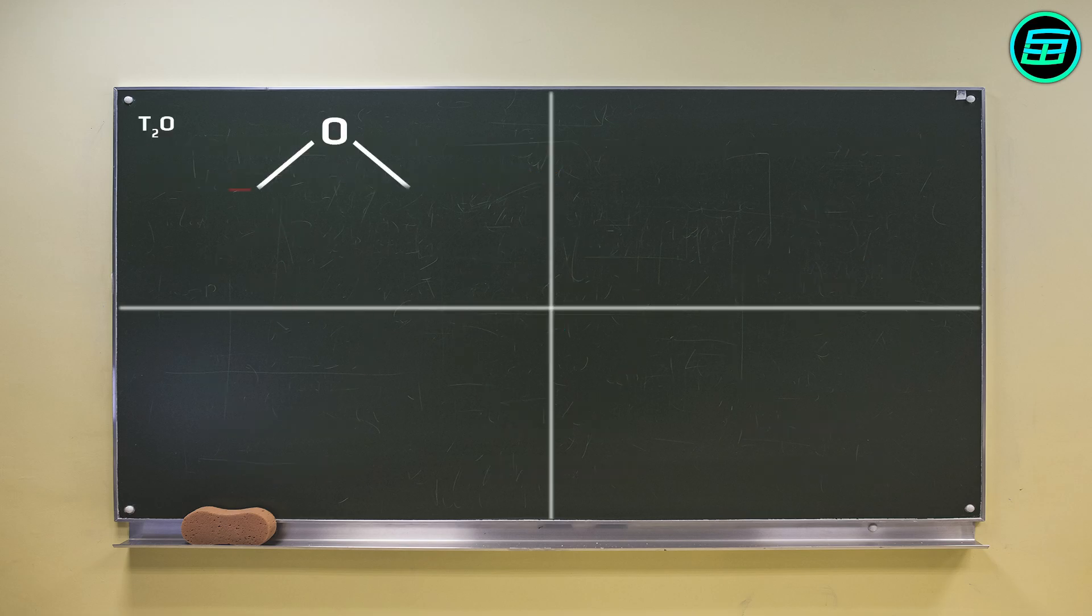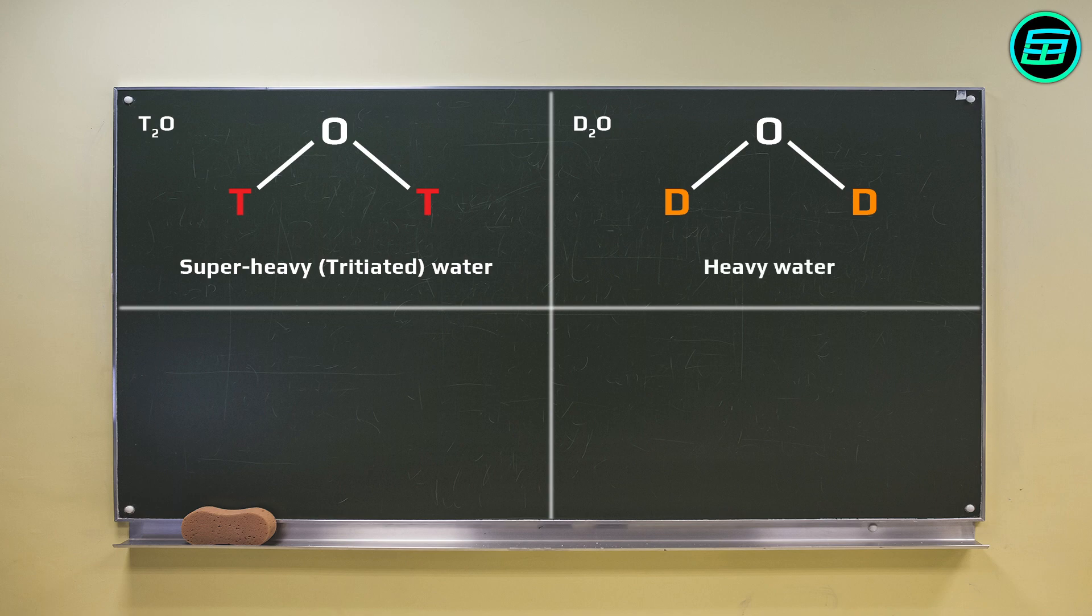Water that's made of tritium is called super heavy water, or tritiated water. Whereas water that's made of deuterium is called heavy water. Water that contains only protium is known as light water. As you might guess, if a water molecule consists of one deuterium and one protium, it's referred to as semi-heavy water.